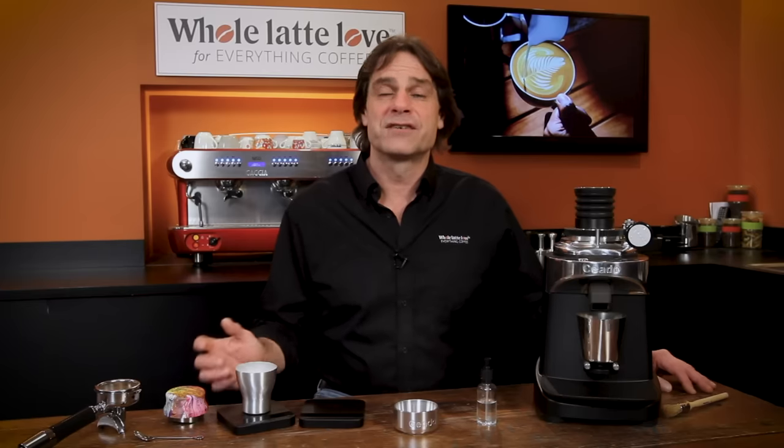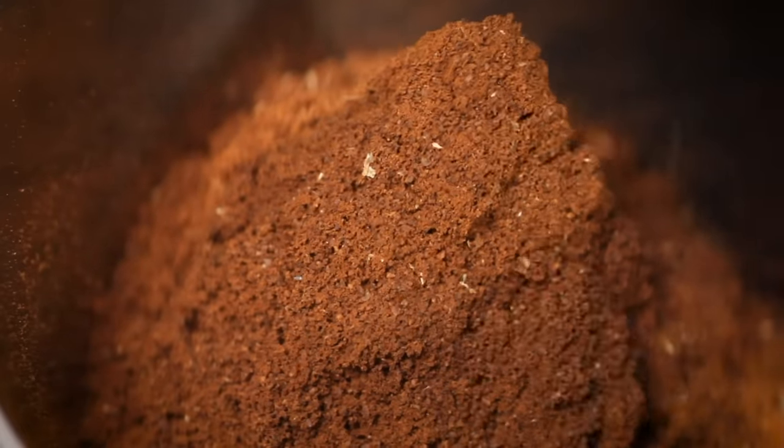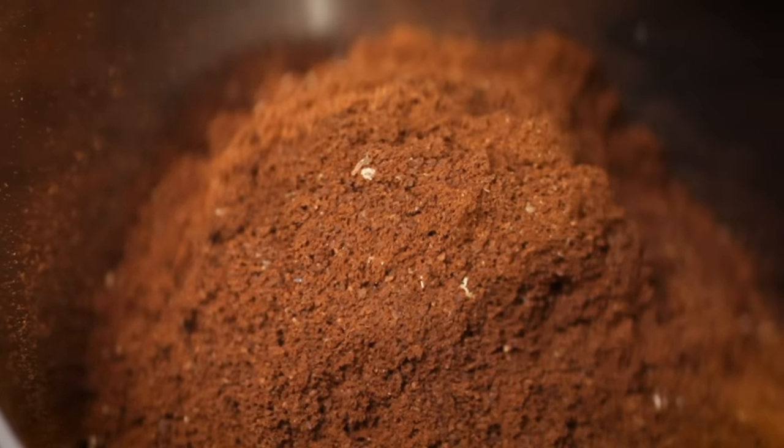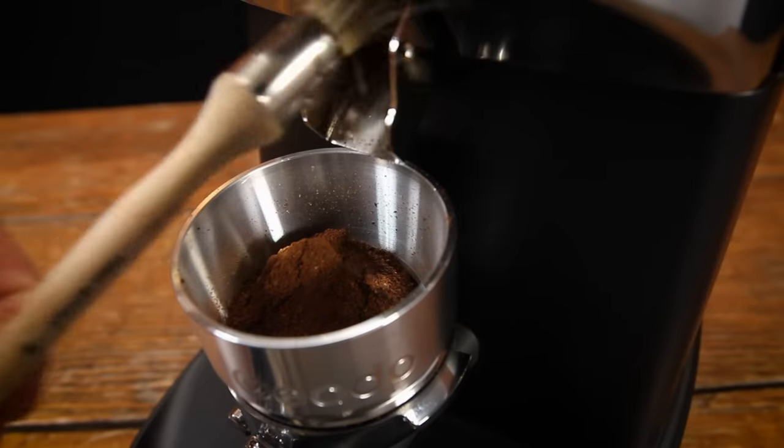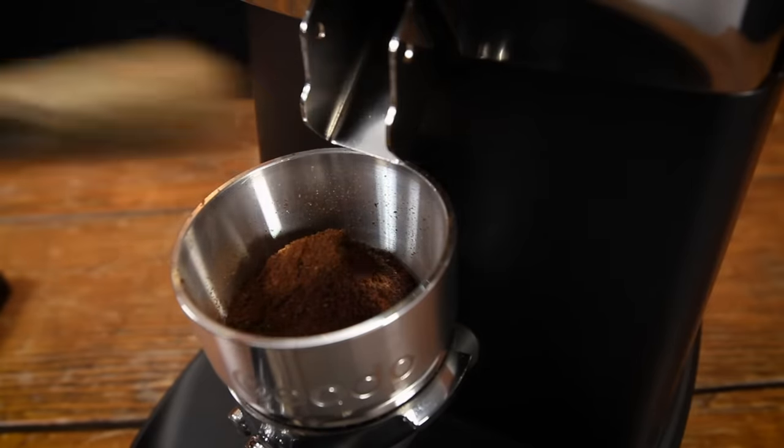As grinding finishes up use an open palm to tap the bellows a few times. This blows out any remaining grinds in the grinder. After that depending on how particular you are you can use the brush to sweep the shoot to make sure you're getting every last tenth of a gram.